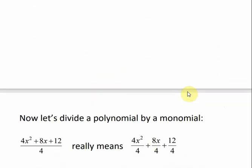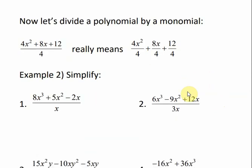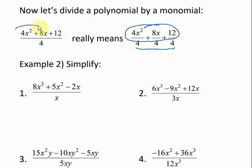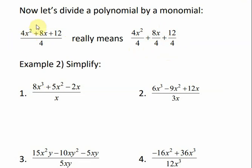That was just a little review. Now let's divide a polynomial by a monomial. Whenever we're adding fractions, we have to have a common denominator. If we have a common denominator, we can add everything in the numerator together. This is kind of going backwards from that — if I had the same denominator, I can take the numerators and add them. But going backwards, if I have it all together, I can split it up as long as I put the same denominator under each part, and then simplify each part.